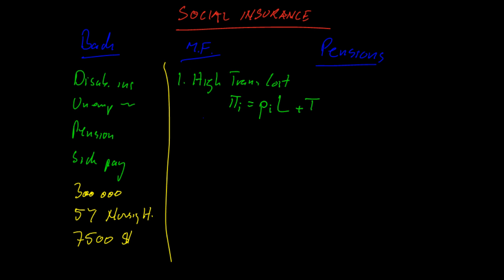Health insurance and social insurance seem to have high transaction costs. This is a market failure in the sense that the market may fail to exist if transaction costs are very high, because people will not pay that. Maybe the government can provide something with a lower transaction cost — when the government provides it, everyone is automatically included. There are no transaction costs for evaluating individuals, which can reduce the overall cost. That's one reason for government intervention in these markets, and almost every country has some kind of intervention.